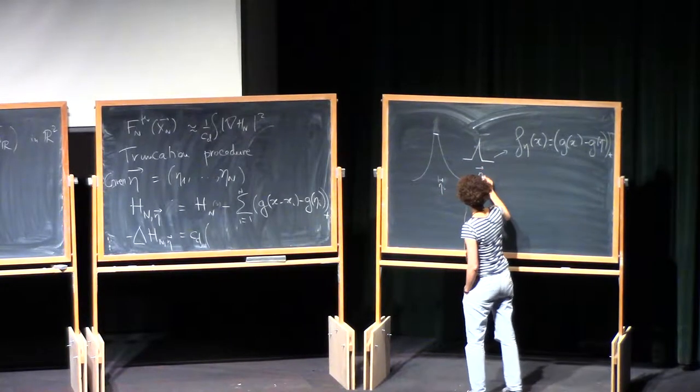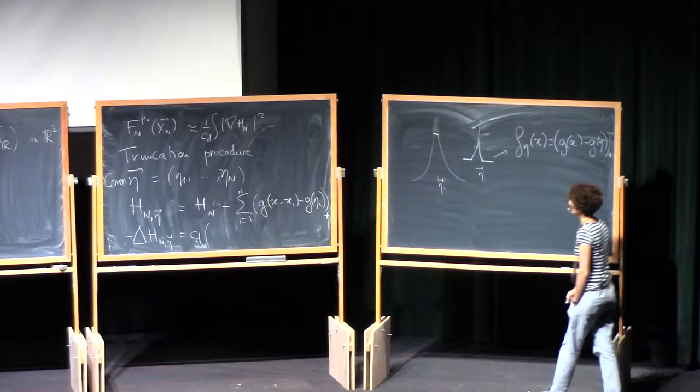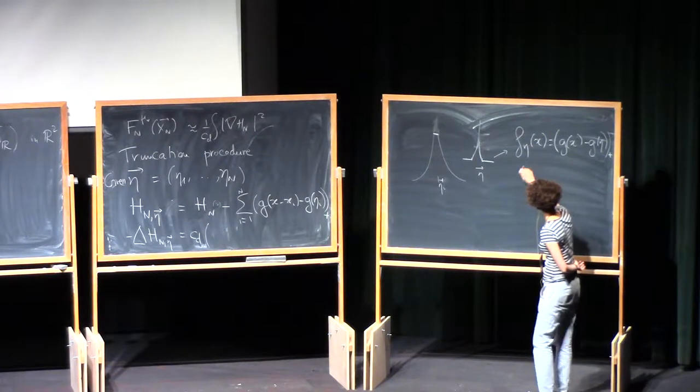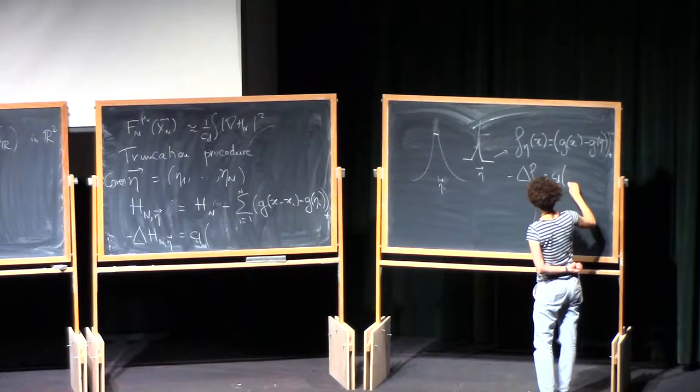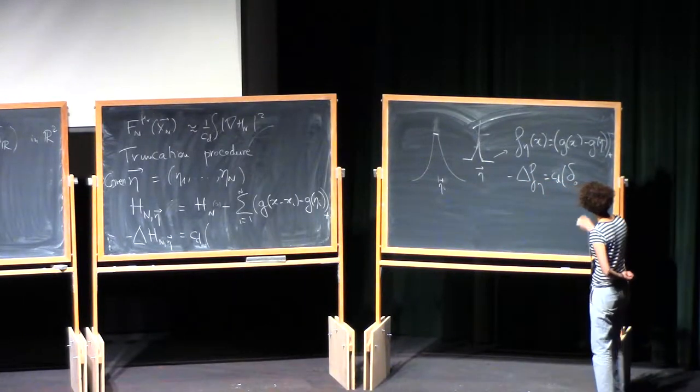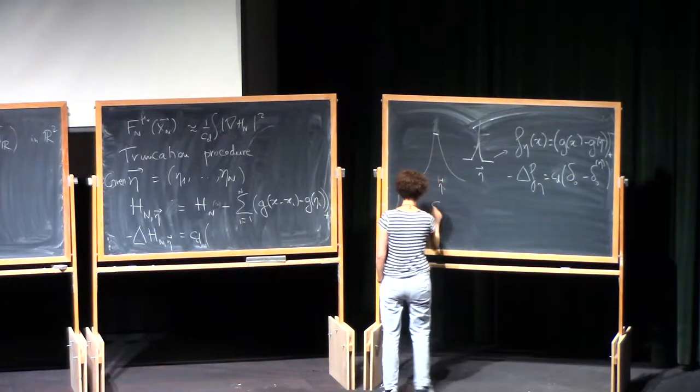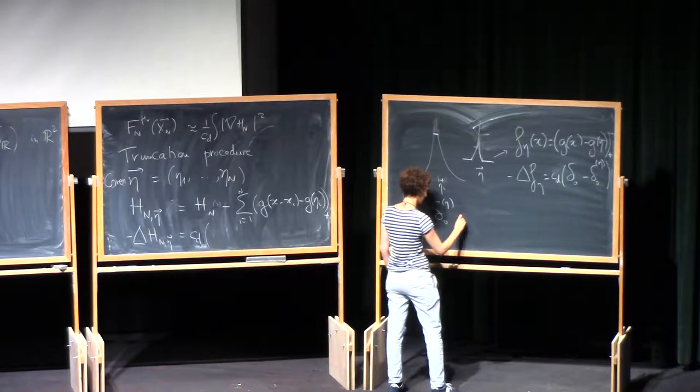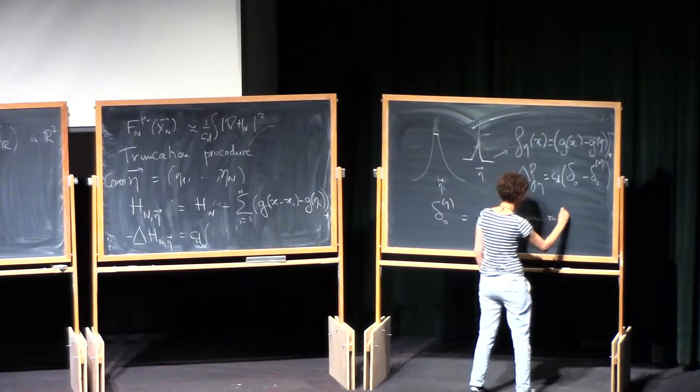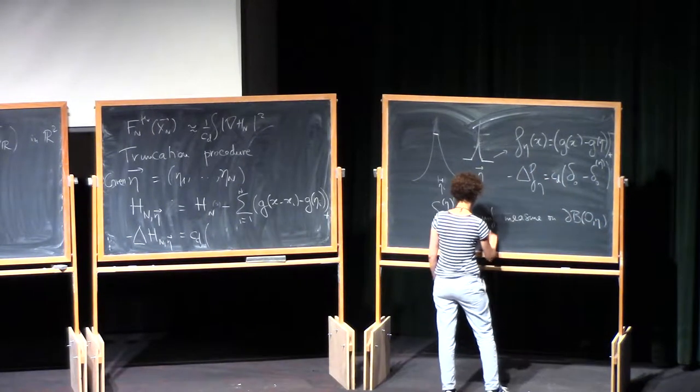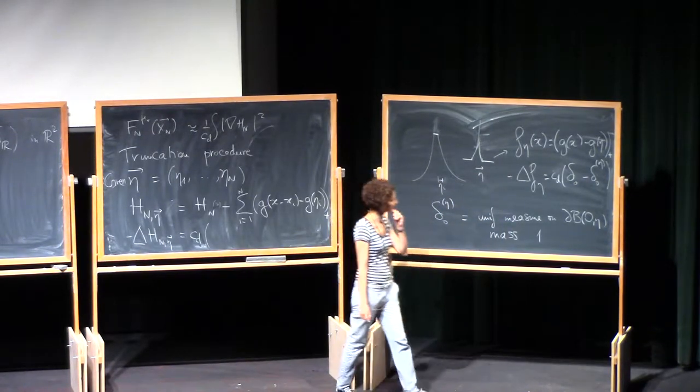So what does this function do? It's zero outside of a ball of radius eta. It has this infinite peak, and then it stops here when you reach g of eta. What is the Laplacian of this guy? It's the Dirac at the origin minus what I will call Dirac zero eta. Where Dirac zero eta or Dirac p eta is a measure of mass 1 on the sphere of radius eta, normalized to have total mass 1.